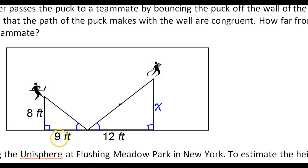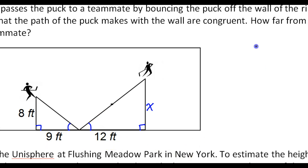We'll call that X. So we can set up a proportion. The 9 and the 12 are corresponding, so that's a good place to start. So 9 over 12, that's a pair of corresponding sides. And of course the 8 and the X are corresponding sides. So if I do 9 over 12, that'll be 8 over X.